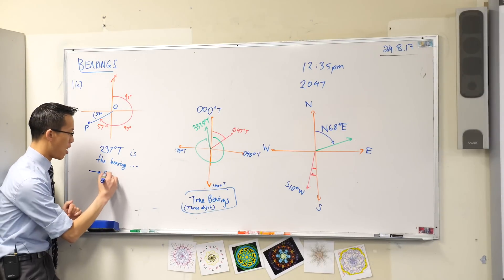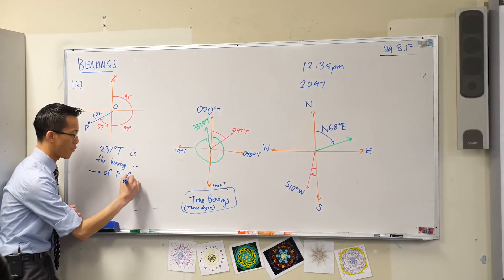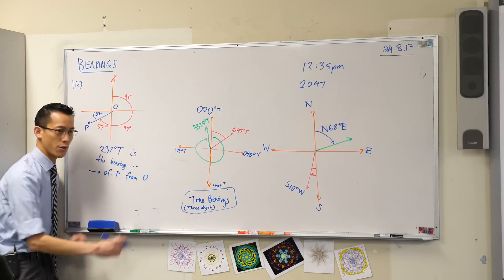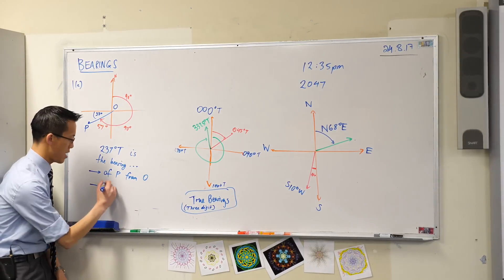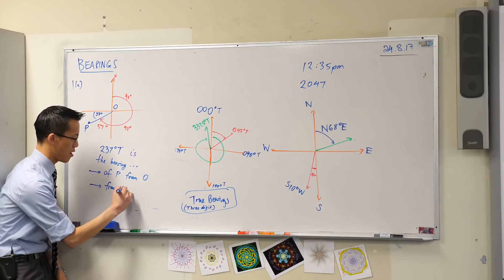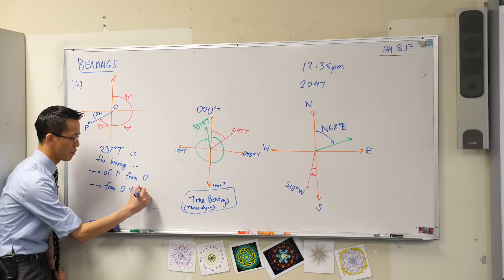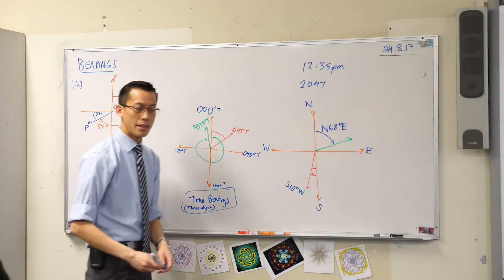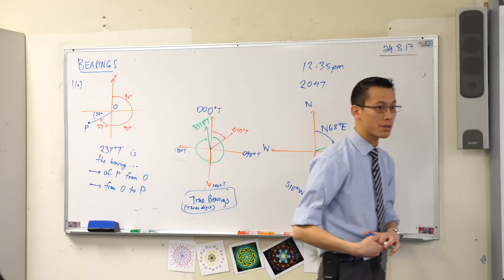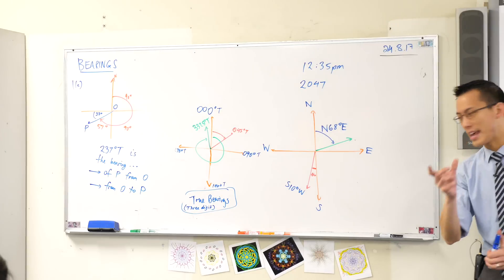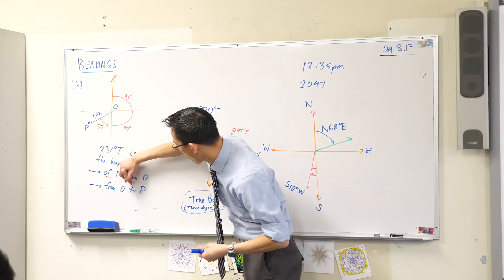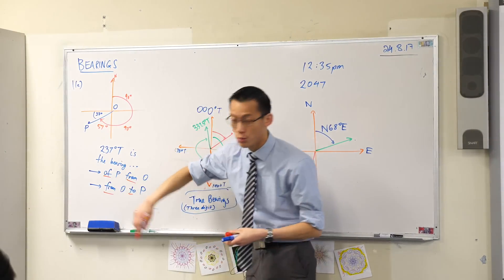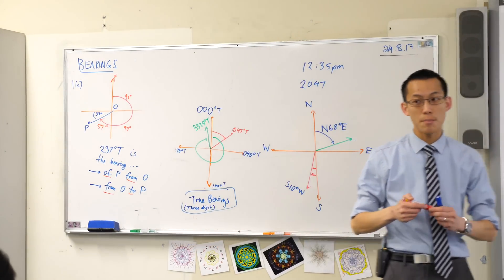And now there are two ways I can say it. I can say, of P from O. Or I could say, from O to P. These mean the same thing. Even though the order is different, you can see it's these tiny little connecting words—of, from, from, to. They're the ones that indicate the meaning.